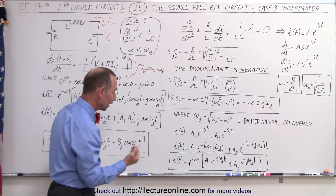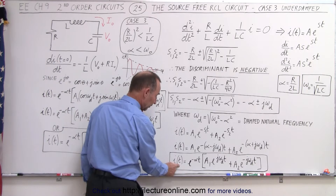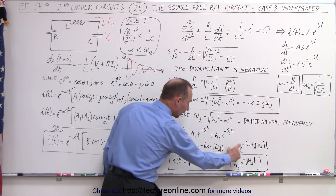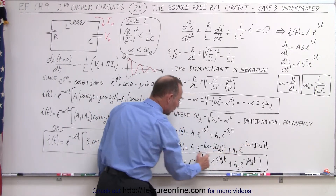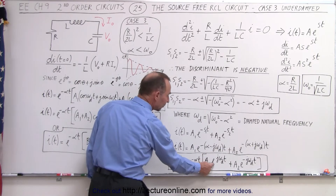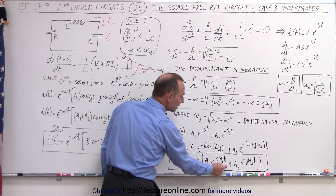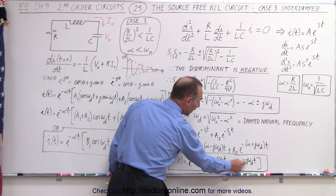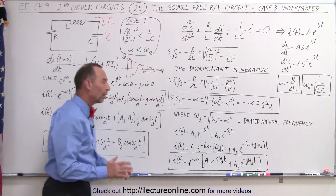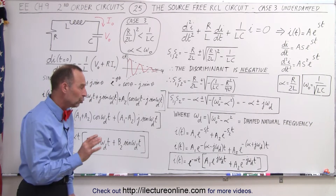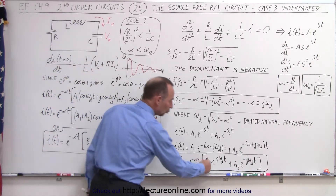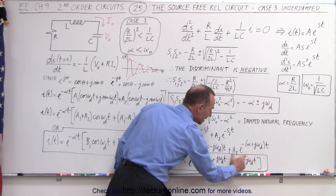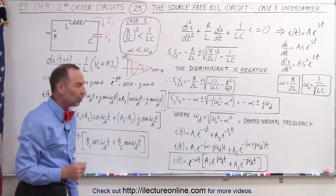We can now write the current as a function of time. We factor out e to the minus α·t, which appears in both terms. Then we have A1 times e to the j·ωd·t, and A2 times e to the minus j·ωd·t. So we now have two terms in our solution which involve the complex number j.